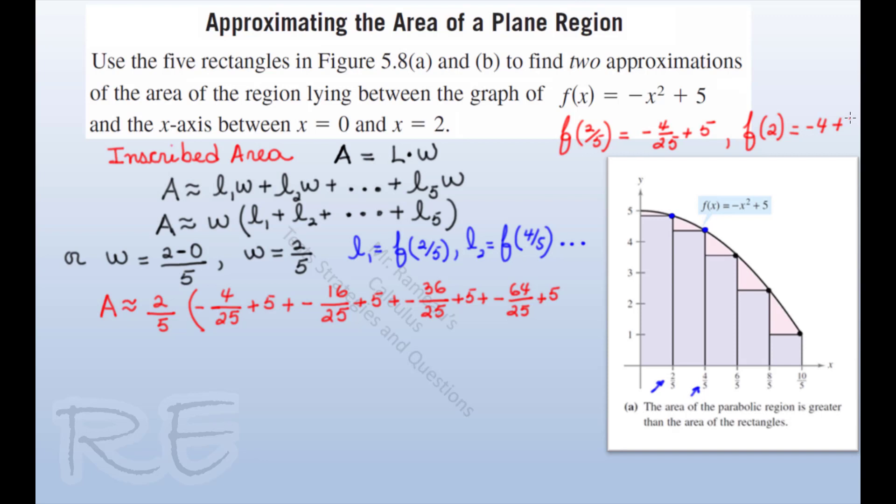We just have to clean up. A is approximately two-fifths times negative 4, negative 16, negative 36, negative 64.